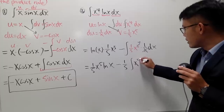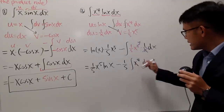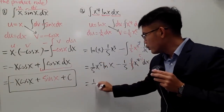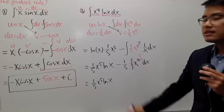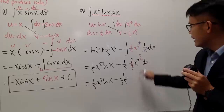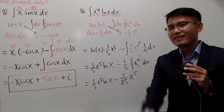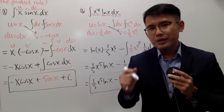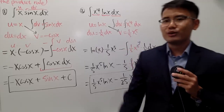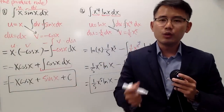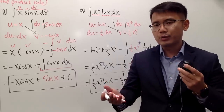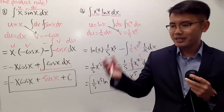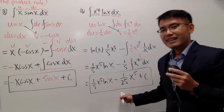So the final answer is (1/5)x⁵·ln(x) − (1/25)x⁵ + C. That's it for the video. We need lots of practice to get good at integrals, so be sure to check out my other videos for other integration techniques, and check the description for links to practice problem files. If you're new to my channel, please subscribe and share this video with your friends, classmates, teachers, family — anyone!